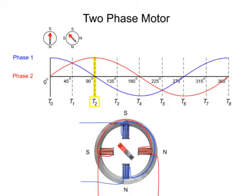At time 2, phase 1 reaches zero current flow, while phase 2 reaches maximum current flow. This causes the rotor to turn 45 degrees counterclockwise to align itself with the horizontal poles.